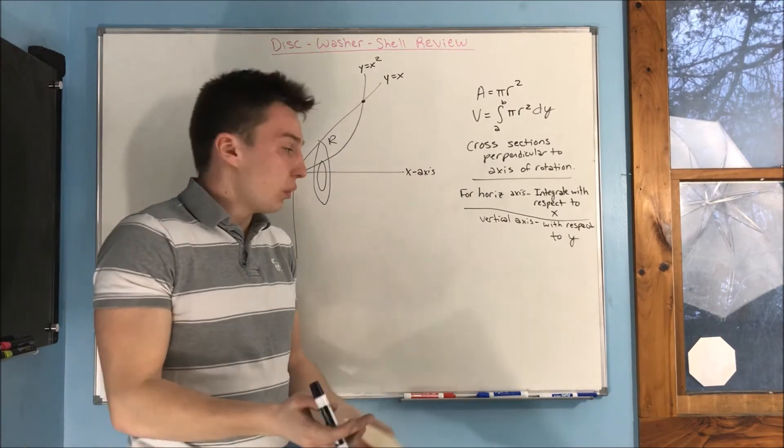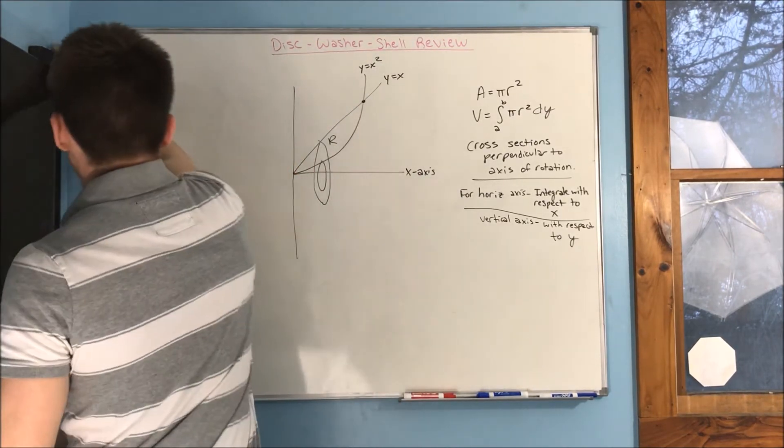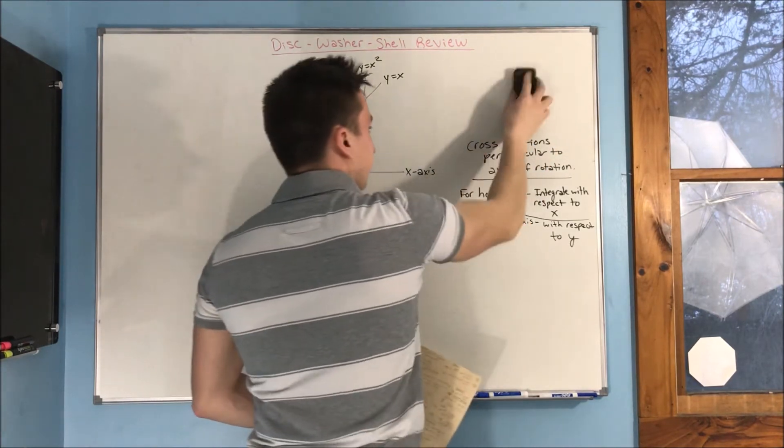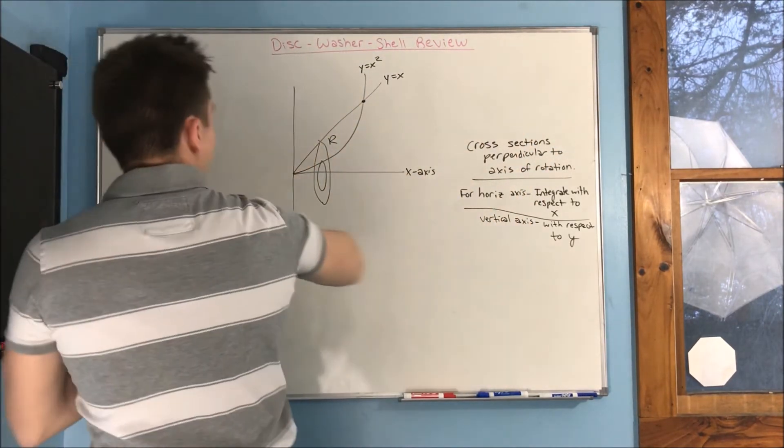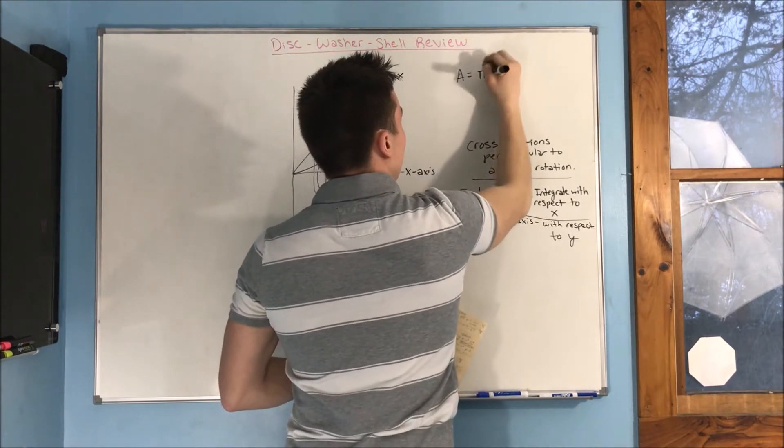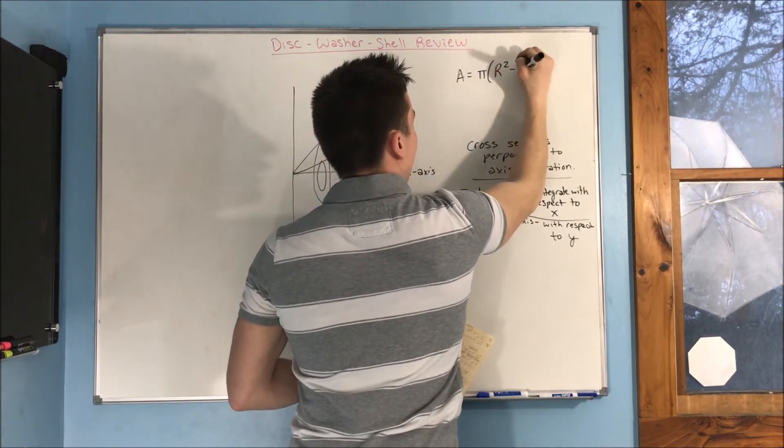That's the whole idea of the washer method. So to do that, we change our formula to be that the area is equal to pi times big R squared minus little r squared.